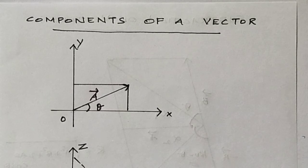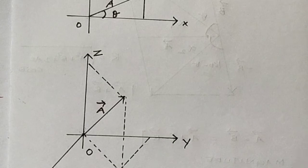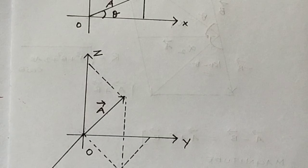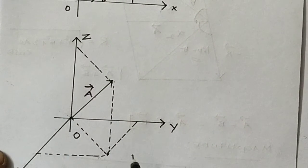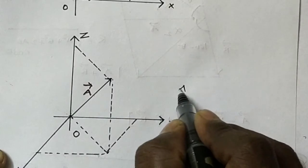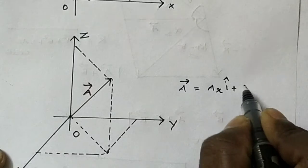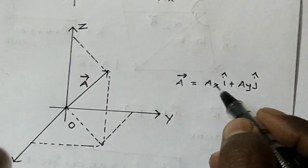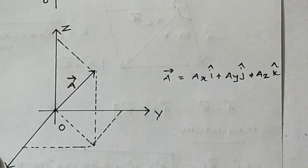Now moving to the component of A vector. Here the Cartesian coordinate system — already we know the XYZ that is the Cartesian coordinate system. Any vector A vector can be resolved into 3 components along the X, Y, and Z directions. In a 3-dimensional coordinate system, the vector A can be written as: A vector equals AX i-cap plus AY j-cap plus AZ k-cap. That is the component representation.